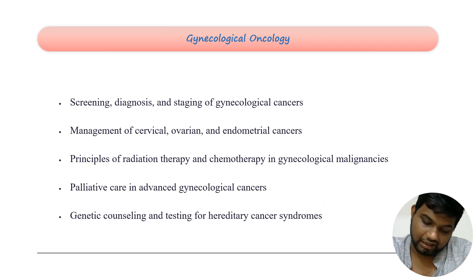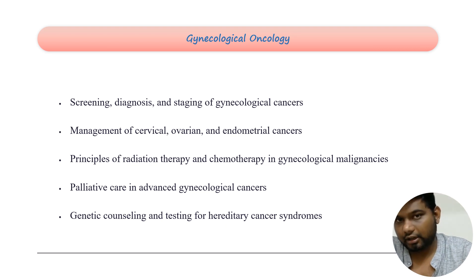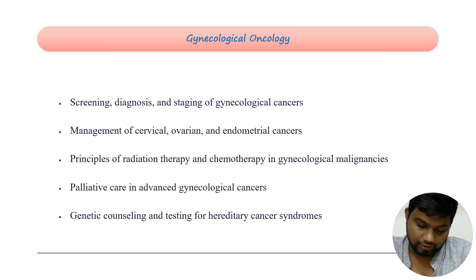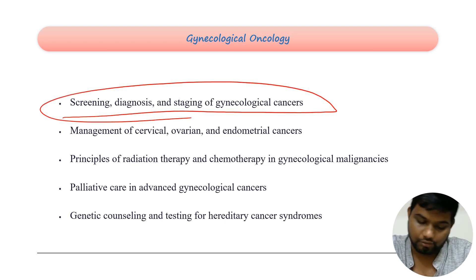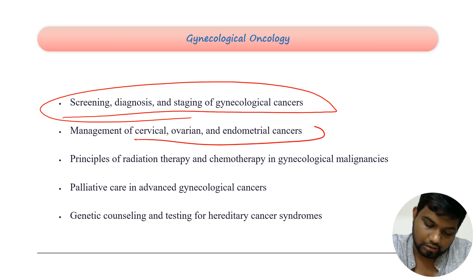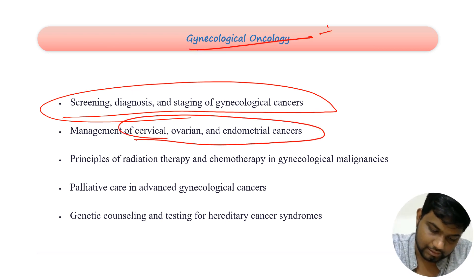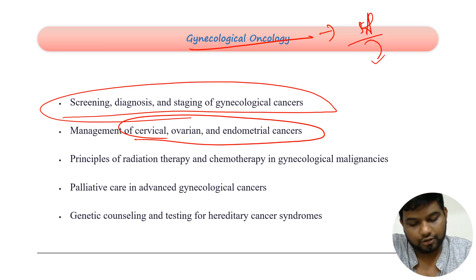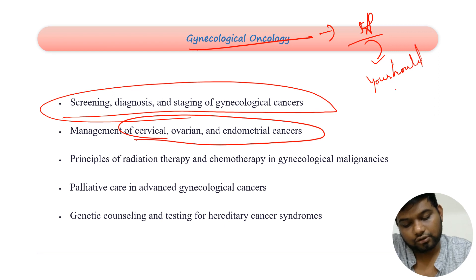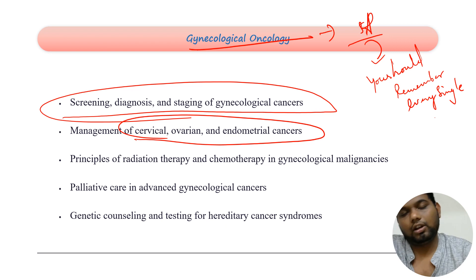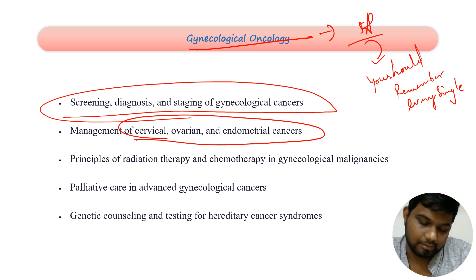In gynecological oncology, all cancers in gynae — ovarian, endometrial, and cervical — are very important. Screening, staging, FIGO staging of gynecological cancers, and management of each stage are critical. This is a five-star-rated topic where you should remember every single point: staging, symptoms, named criteria, named staging systems, and management at every stage. Every single point in gynecological oncology is really important.